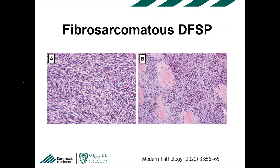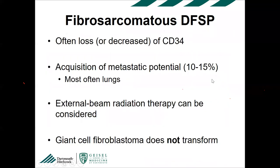Fibrosarcomatous transformation of DFSP confers metastatic potential in about 15% of cases. The diagnosis is morphologic: you need to see a fascicular growth pattern that truly looks like fibrosarcoma, with increased mitotic activity; myoid nodules are seen more frequently in fibrosarcomatous DFSP but are not an absolute criterion. Do not base the diagnosis of fibrosarcomatous transformation on loss of CD34 — you can have CD34 positivity and still have fibrosarcomatous transformation. It is purely a morphologic diagnosis.